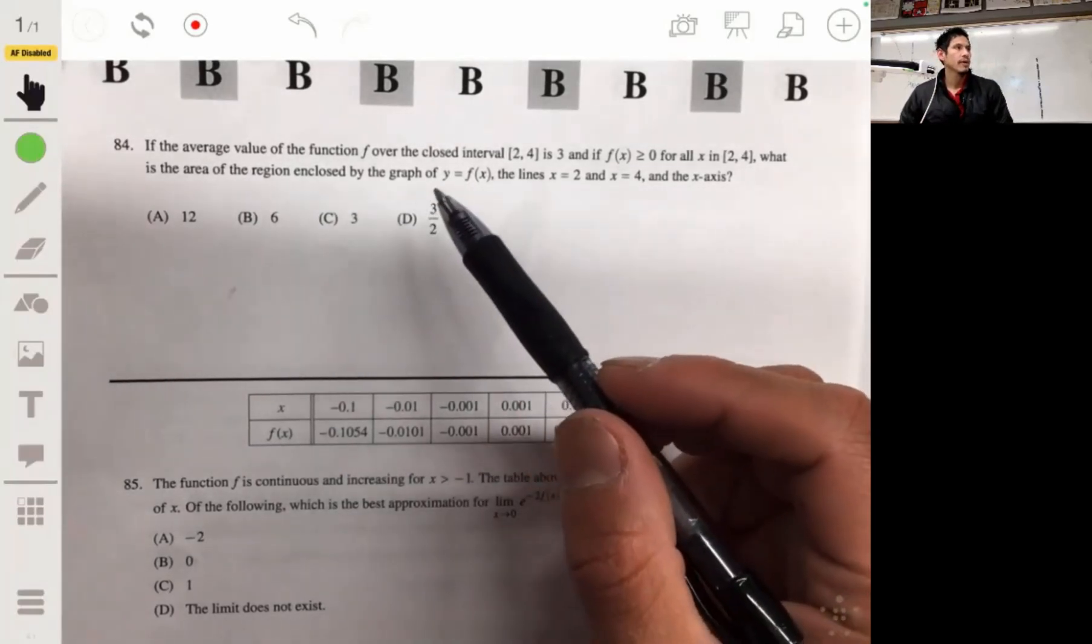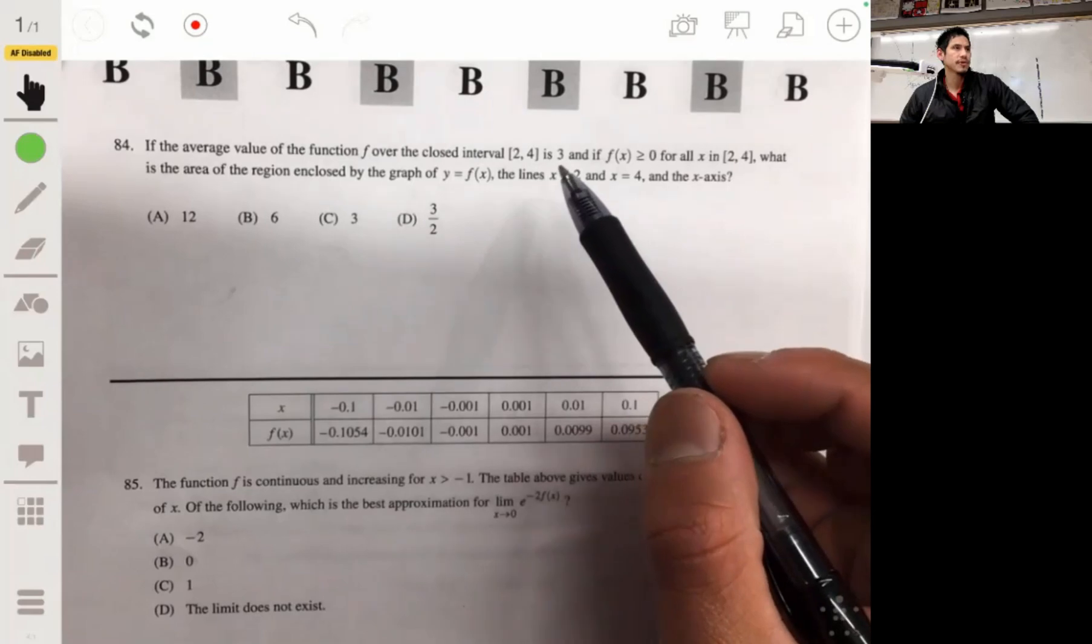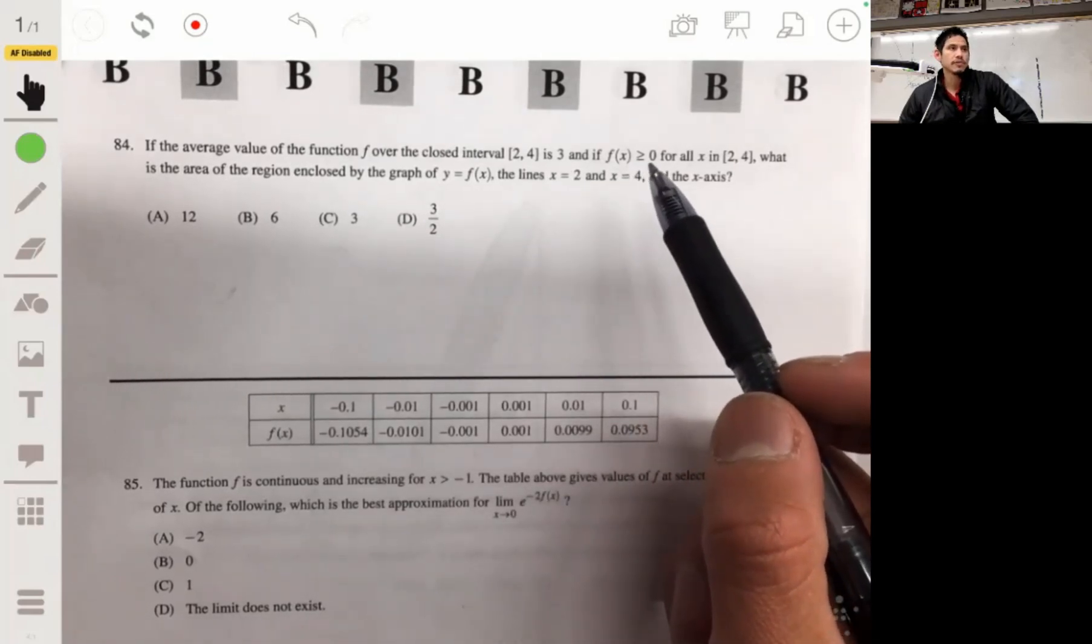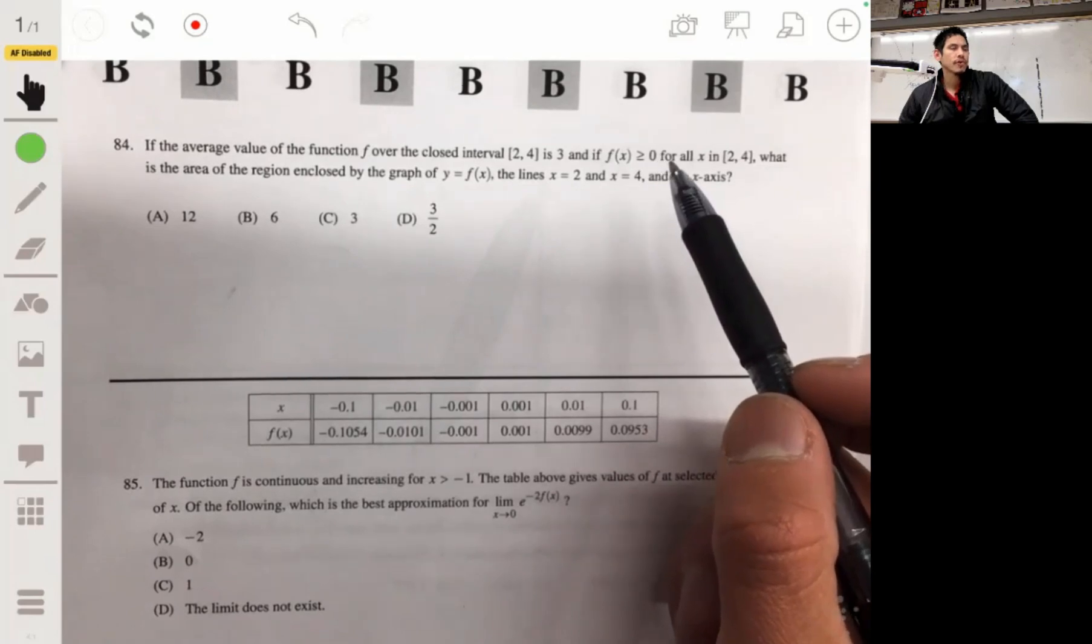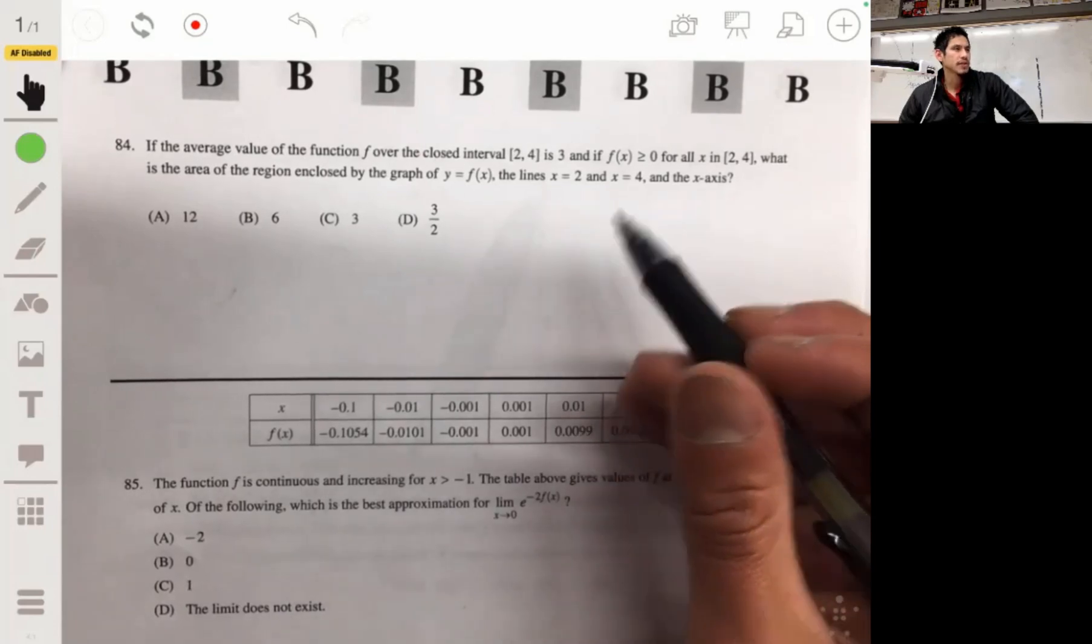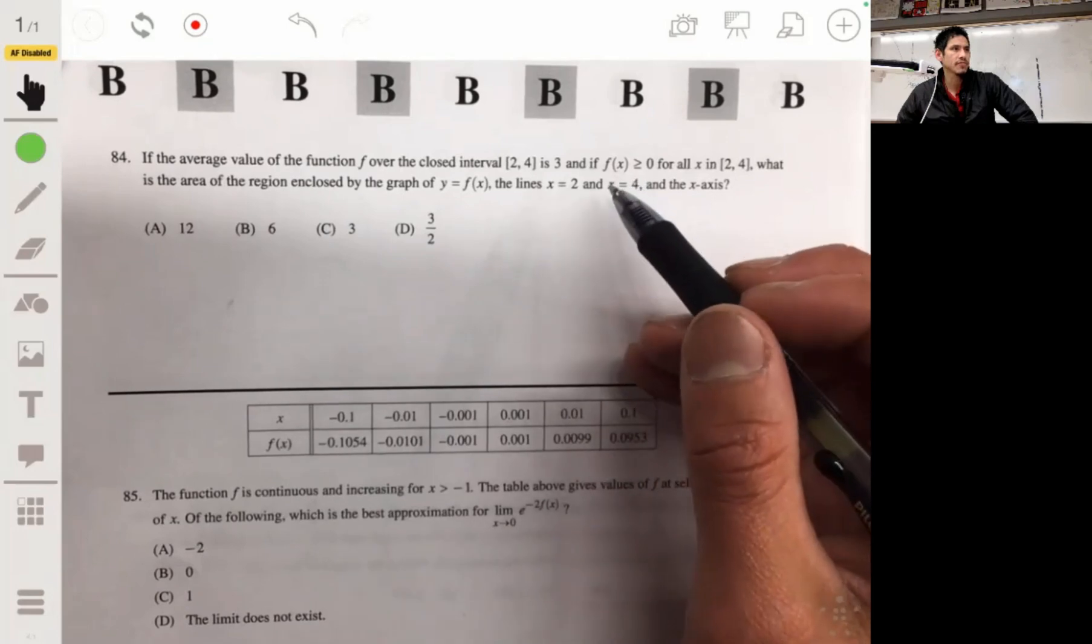Alright, for problem 84, we have that the average value of a function f over the closed interval 2 to 4 is 3. If f(x) is greater than or equal to 0, so it's positive for all x in 2 to 4, what is the area of the region enclosed by the graph of y equals f(x) and the lines x equals 2 and x equals 4 on the x-axis?